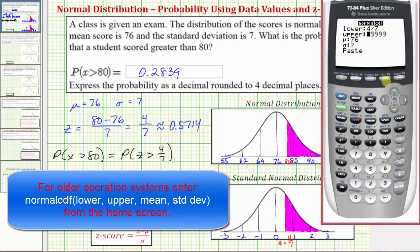The exaggeration for the upper bound should be fine. But now because we're using z-scores, we enter a mean of zero and a standard deviation of one. And enter. Notice how we get the exact same probability as we did before. The probability is approximately 0.2839.